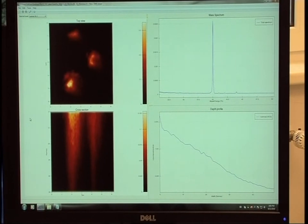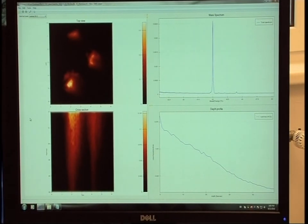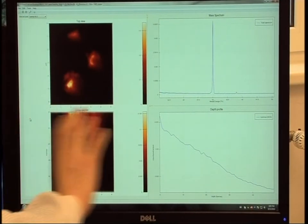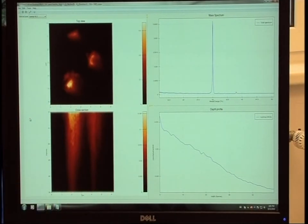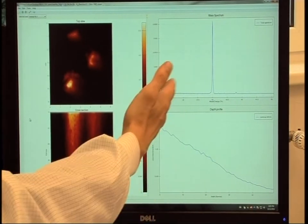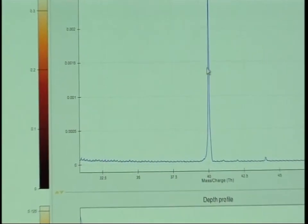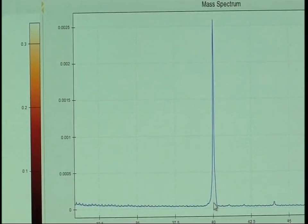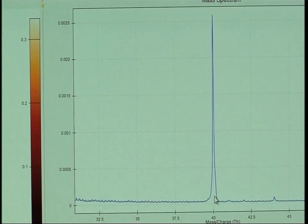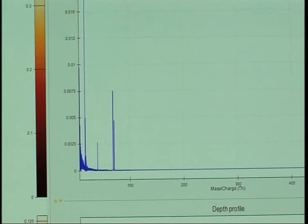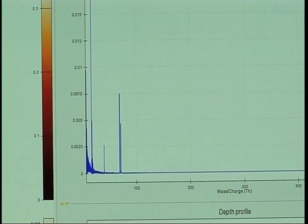The ion beam gradually mills the sample, and the TOF spectrometer determines the chemical composition. Here we can see the top view of the sample, and here is a cross-sectioned image as if from the side. On the right, we can see the mass spectrum. We can, for example, look at the element with atomic number 40, that is, calcium.